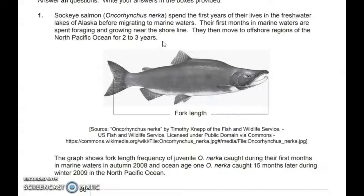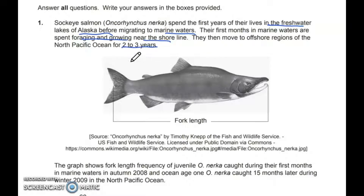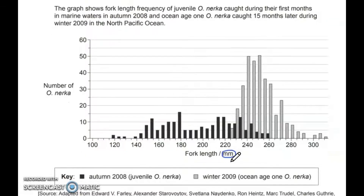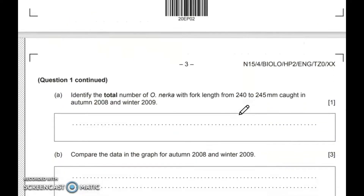So first of all the database questions. I generally like to highlight a lot, so I'm going to highlight the key terms in this paragraph. It looks like this database question is about this fish and we have a statistic called the fork length, which just seems to be the length of the fish. There's a graph here which shows the length of the fish in order and the frequency — it's a frequency distribution. Key to note: units are in millimeters, and importantly it covers autumn 2008 and winter 2009.